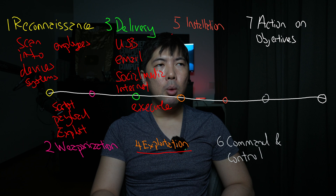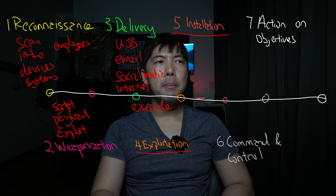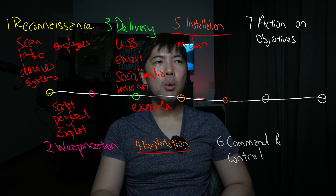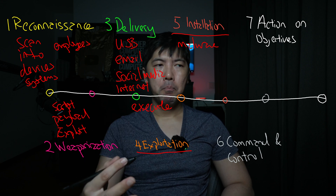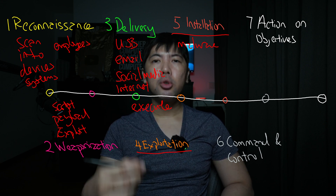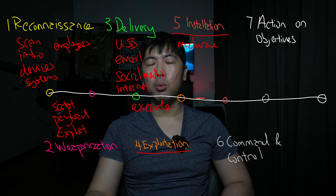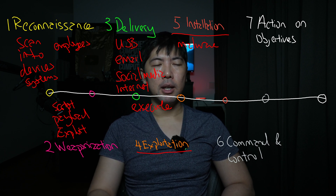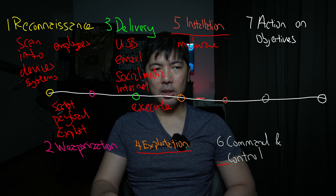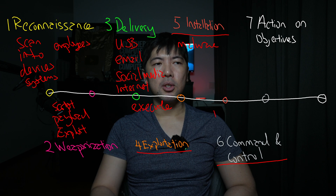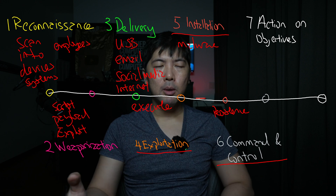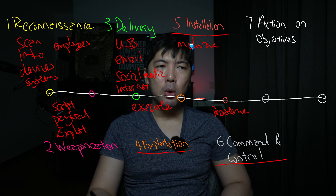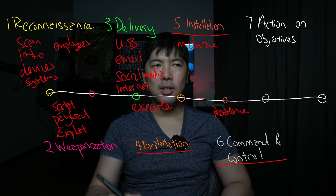Along with exploiting the vulnerability, the payload can also install malware. The exploitation instructs the system to download a malicious software, leading to Phase 6 — Persistence. Persistence means that even if the user removes the program or executable, the attacker continues to have remote access and control of the computer.